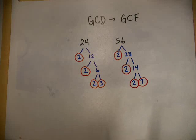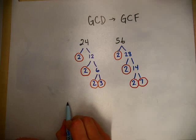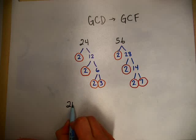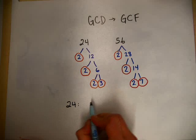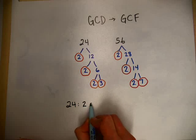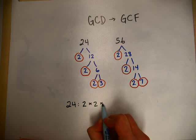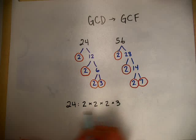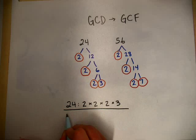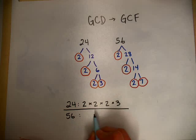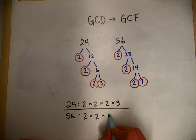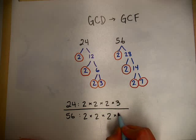Now I'm going to list out the factors. 24 is 2 times 2 times 2 times 3, and 56 is 2 times 2 times 2 times 7.